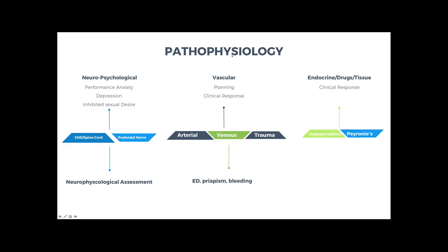Erectile dysfunction is a very complex topic involving neuropsychology, vascular factors, hormones, nerves, and muscles. For interventional radiologists, we can only help with a very narrow part of this problem — the vascular part. Patients must undergo a comprehensive workup with a multidisciplinary team including urology, sometimes neurology and endocrinology. We want to make sure the patient does not have problems with anxiety or depression, does not have spinal cord or nerve injuries, and does not have endocrine issues, hormonal deficiencies, drug-related problems, or tissue problems like Peyronie's disease — because those patients are not candidates for our treatment.